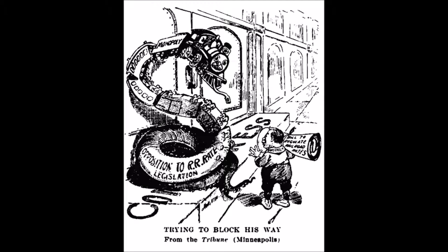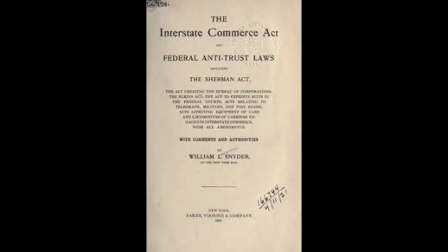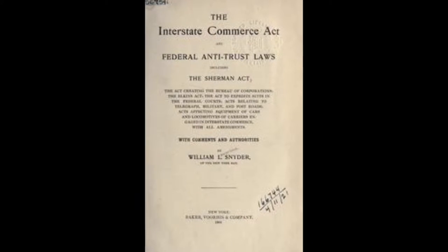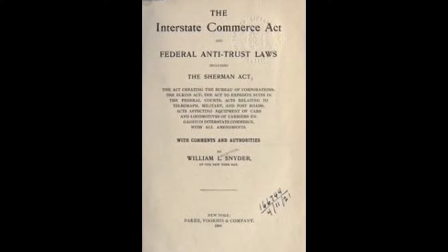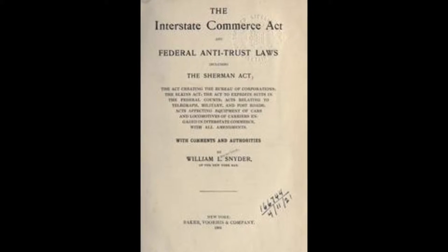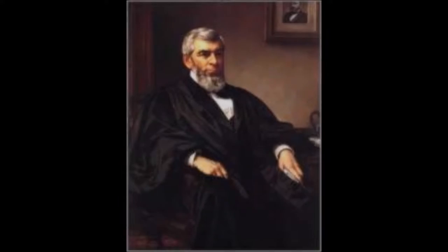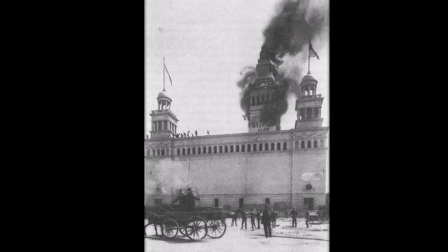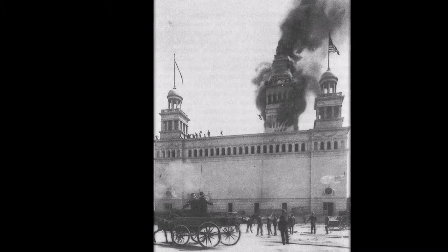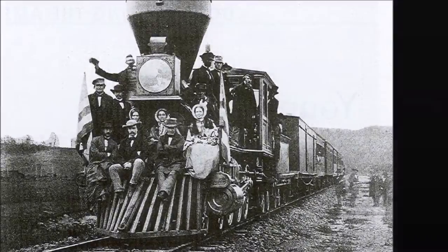The act required shipping rates to be reasonable and just, rates to be published, secret rebates outlawed, and price discrimination against small markets made illegal. In 1887, the firm of Ira Munn and George Scott's successors used illegal rates for their warehouses, and then they appealed to the Illinois Supreme Court when they upheld the law.